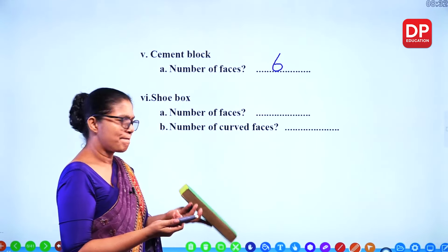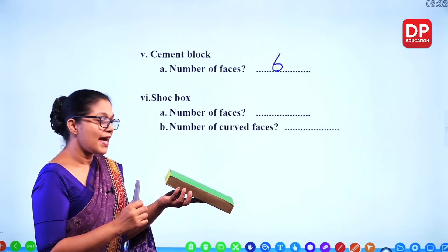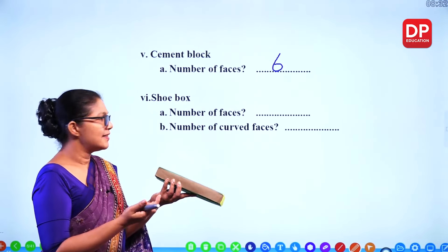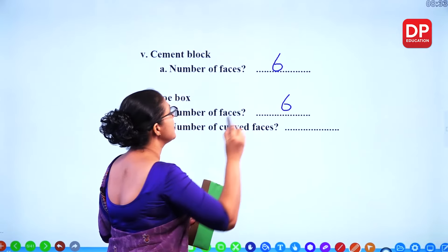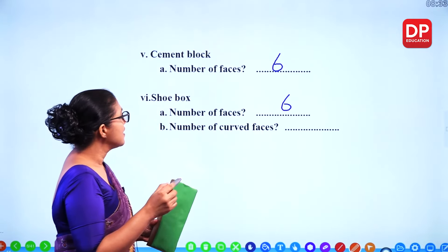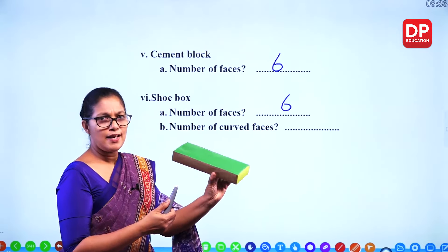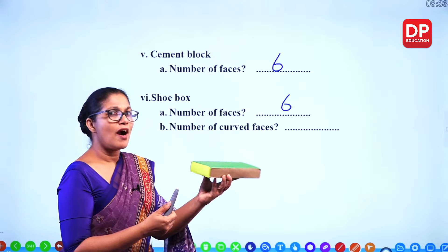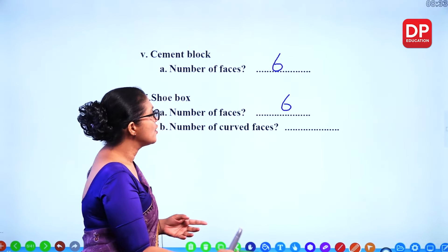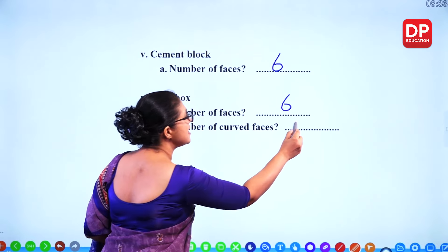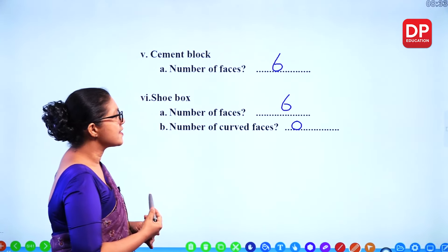A shoe box is similar — it also has six faces. In a shoe box, you cannot see any curved surfaces, so there are zero curved surfaces.